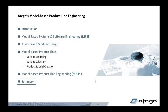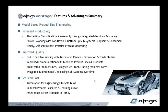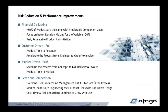So let's move on to the summary. The features and advantages of Otago Vantage and model-based product line engineering are increased productivity, improved overall quality, and reduced cost. It also de-risks the situation by leaving 80% of the product the same, letting you focus on the 20% that varies.